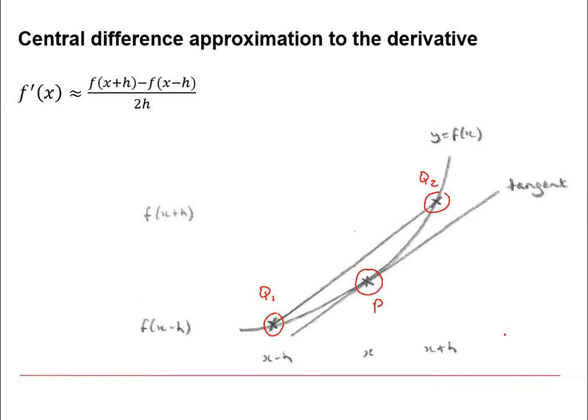We're going to be using the line between Q1 and Q2 as an approximation to the tangent line that we're interested in. As we can see here, the slope of Q1 and Q2 is a lot closer to the slope of the tangent line than we saw in the previous video with the forward difference method, and this is generally the case for most functions.